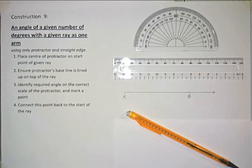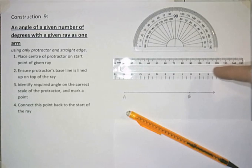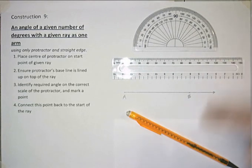Construction 9. Constructing an angle of a given number of degrees with a given ray as one of the arms. So we're using a protractor, a straight edge and a pencil.